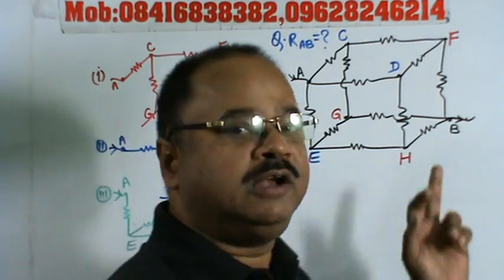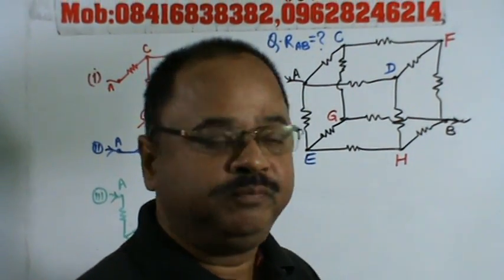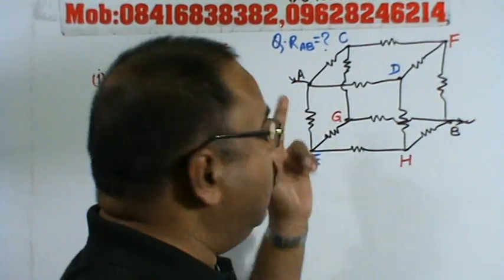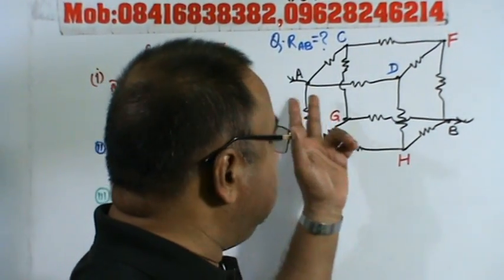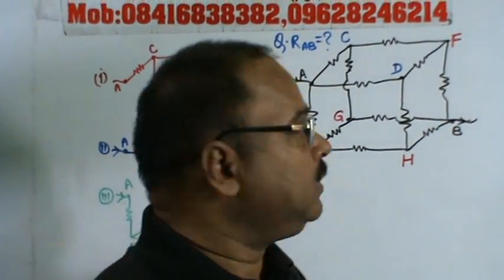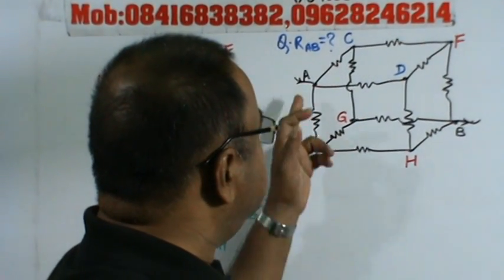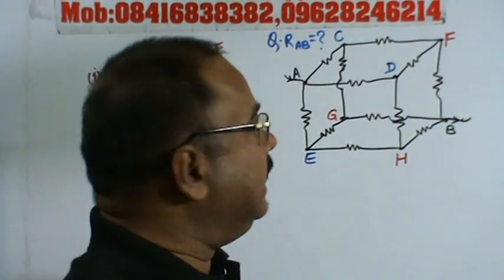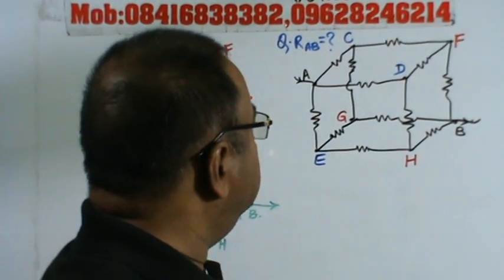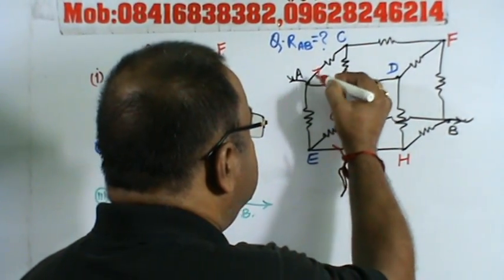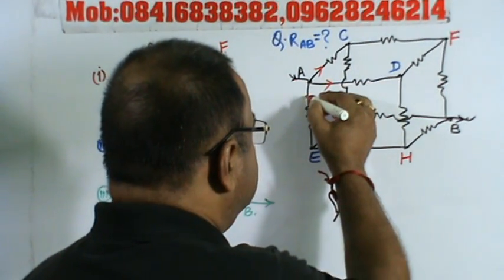Current will enter at A and leave the cube at B. Let us see how current is entering at A and going to B. There are three possibilities. First, current will enter at A and divide into three parts: one part is AC, another is AD, and another is AE.